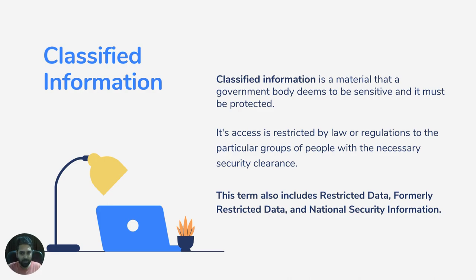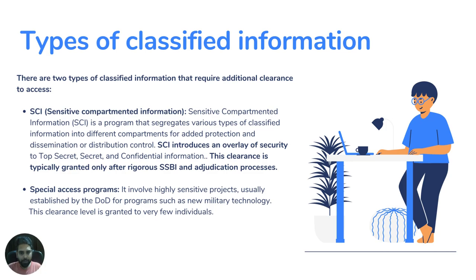We will discuss national security and clearance in detail, but first let's understand the two types of classified information. The first one is SCI — Sensitive Compartmented Information. SCI is a kind of program that segregates various types of classified information into different compartments and provides protection in a distributed, controlled way.